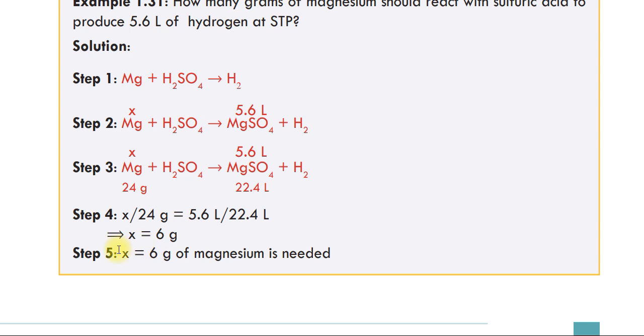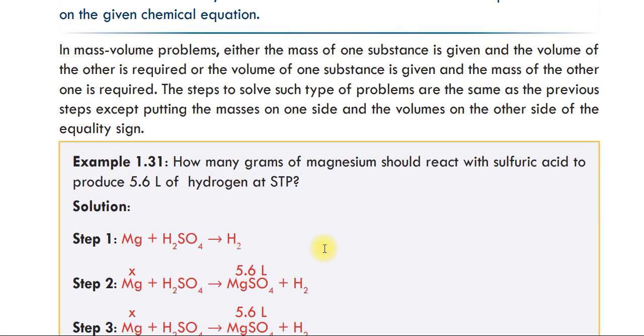Step 5: 6 grams of magnesium is needed to react with sulfuric acid and produce 5.6 liters of hydrogen.